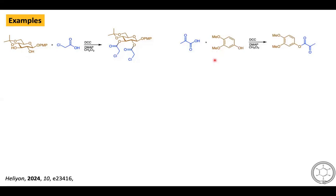In the next example, a keto carboxylic acid reacts with phenols under Steglitz reaction conditions to provide the corresponding ester compounds. This reaction is particularly interesting and important because under Fischer esterification conditions, phenol-related compounds fail to provide corresponding ester compounds, but Steglitz conditions make it possible to generate this type of ester.